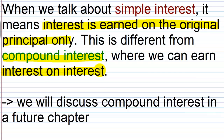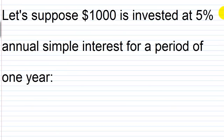your balance would be eleven hundred dollars and you can earn interest on that eleven hundred dollars. With simple interest, even though your balance is eleven hundred dollars, you still only get paid interest on that original one thousand dollars. That's the difference between the two. We'll discuss compound interest in a future chapter as it has a slightly more difficult formula. For right now we're just going to learn this simple interest formula.